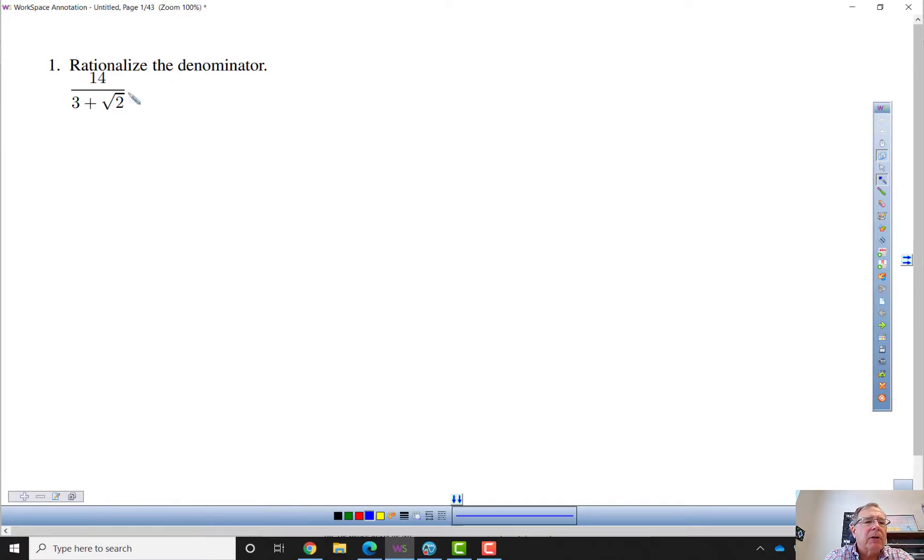So rationalize the denominator. We have a rational expression here, and we have an irrational number 3 plus the square root of 2 in the denominator.